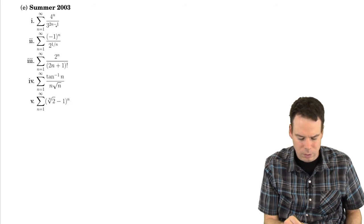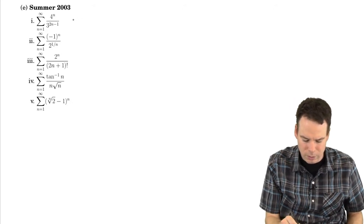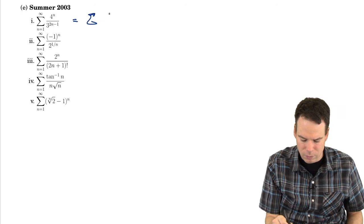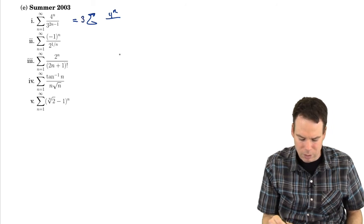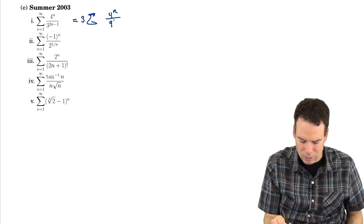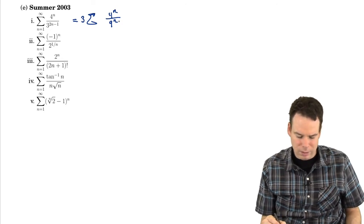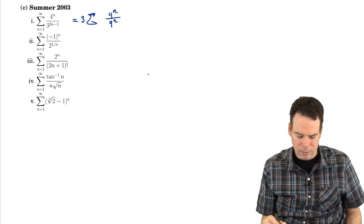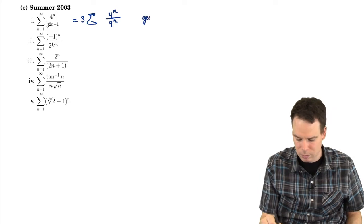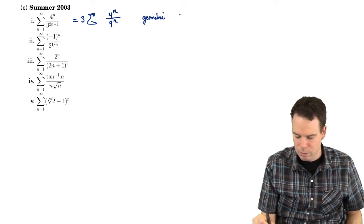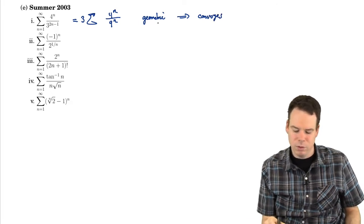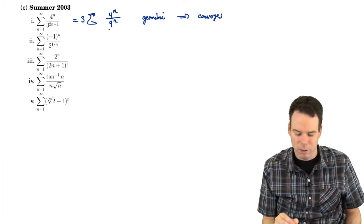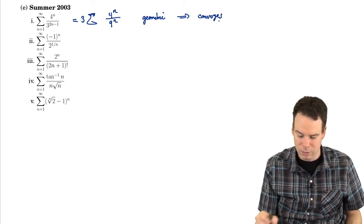So let's look at this first one, 4 to the n over 3 to the 2n minus 1. Just rearranging this, I've got 4 to the n, I've got 3 to the negative 1, so I'll bring that out as a 3, and then I've got 9 to the n. So just rearranging it slightly, I see that it's geometric and therefore it converges. Now why can I conclude it converges? It's geometric with the ratio being 4 ninths, so that's smaller than 1, so it has to converge.